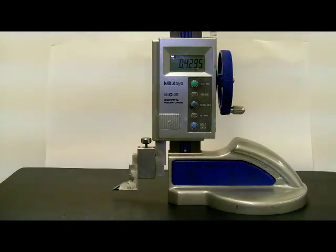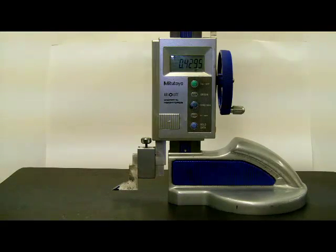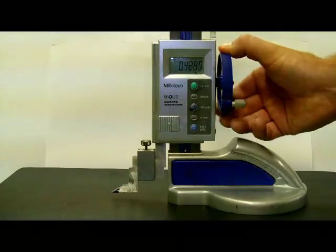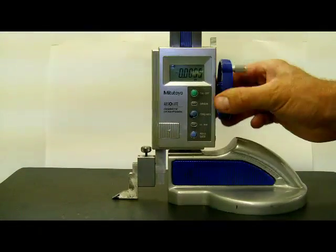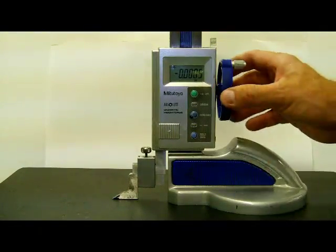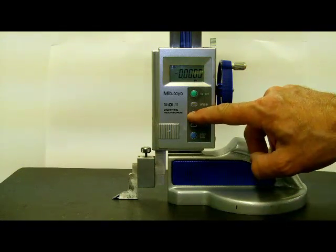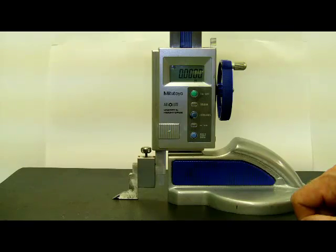This one here is not a vernier caliper, it's a digital caliper. And the reason why is we have this digital readout. Here what I would want to do again is calibrate it, set it down on the table after it's been cleaned and make sure the reading is zero. If not we can just hit the zero button and we can calibrate it that way.